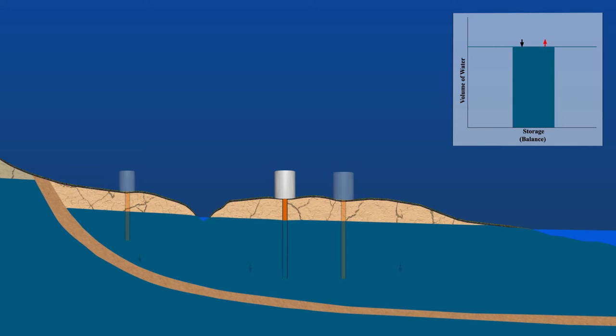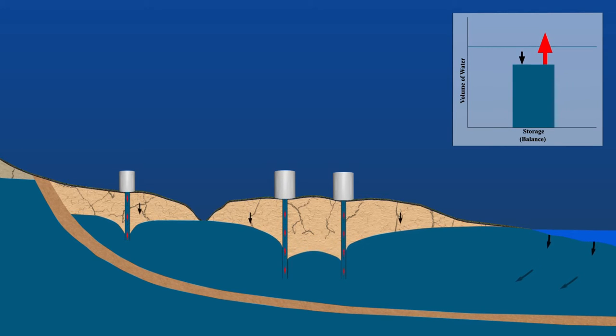When inflows can't keep up with pumping, we are depleting the aquifer. Prolonged pumping in excess of inflows reduces the amount of water in the aquifer and as a result, pumping becomes more difficult and costly as water must be lifted from increasing depths.